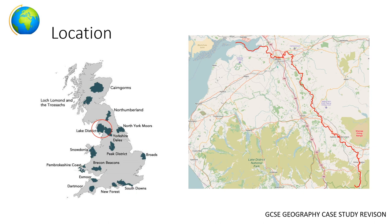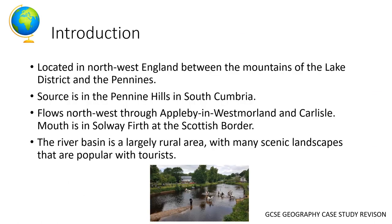So where is the River Eden? The area of Eden is located in the northwest of England, next to the Lake District. It runs roughly in a northwesterly direction, and we can see on the right-hand map on screen the red line representing the River Eden running through Carlisle and eventually into the Irish Sea. It's located between the mountains of the Lake District and the Pennines.